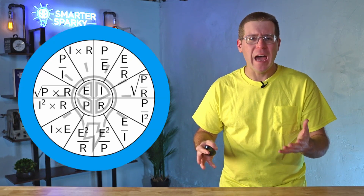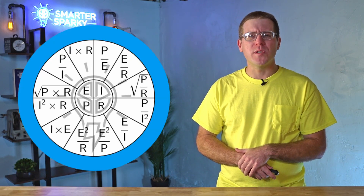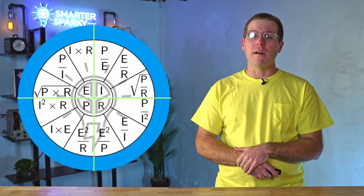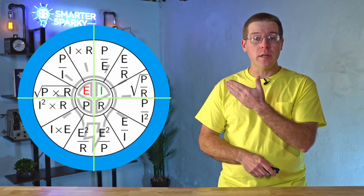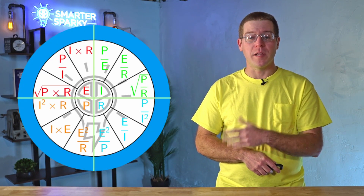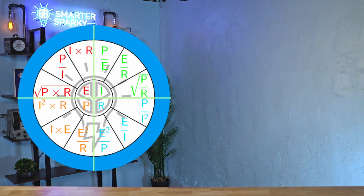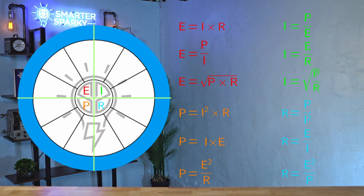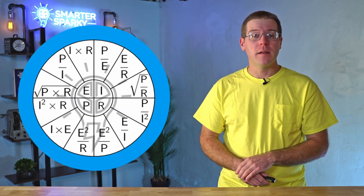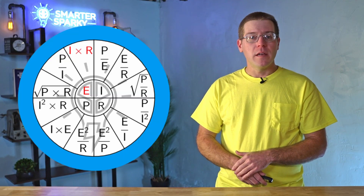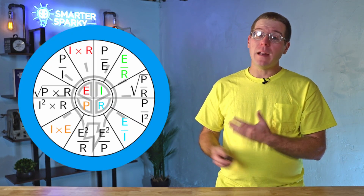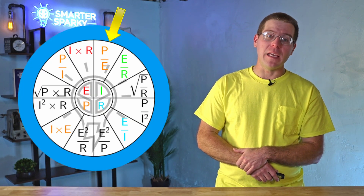Maybe you've seen a wheel like this before — whether you have or not, it certainly looks intimidating. This wheel is called Ohm's Wheel or Watt's Wheel, and it's actually pretty simple. The wheel has four quadrants, each calculating one of the four items: voltage, current, resistance, and power. Each quadrant has three formulas within it. For voltage, for example: E equals I times R; E equals P divided by I; and E also equals the square root of P times R. Ohm's Law is built within it — E equals I times R; I equals E divided by R; R equals E divided by I. Watt's Law is also in there: P equals I times E; I equals P divided by E; and E equals P divided by I.